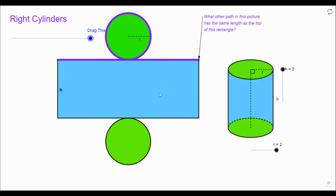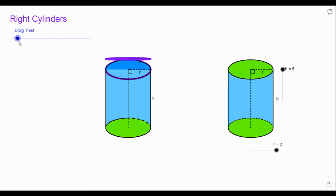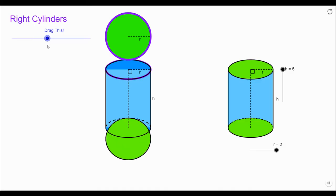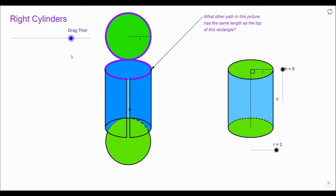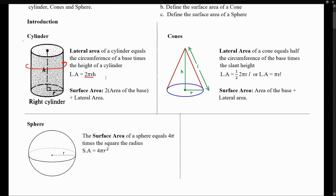So the area of this blue section is a rectangle where the base of the rectangle is the circumference of the circle, which is 2πr, and the height is the same height of the cylinder. Let's do it one more time from the beginning. Here we have our cylinder — we open it — and notice that if we continue to open it, it becomes the rectangle whose base is the circumference 2πr and whose height is the height of the cylinder. So we can define the lateral area as being 2πr times the height.